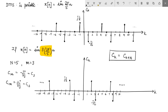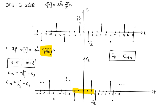Over any period of length 5 — say −5 to 0, or −4 to 1 — there are only two non-zero coefficients. This is how you can sketch the Fourier spectrum of a discrete time periodic signal. Thank you.